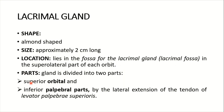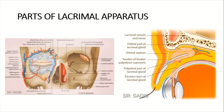The lacrimal gland has two parts: the superior one is the orbital part and the inferior one is the palpebral part. This division is brought about by the tendon of levator palpebrae superioris.